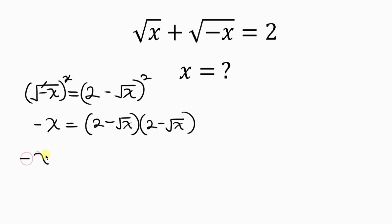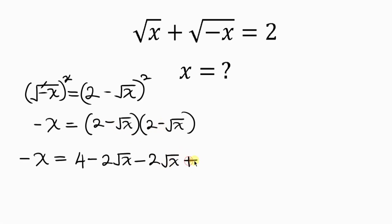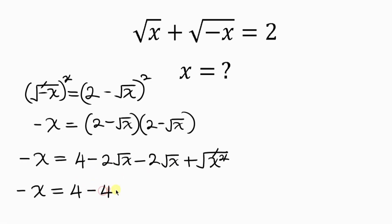So we have negative x equal to: expanding the right hand side, 2 times 2 is 4, minus 2 times the square root of x is 2 root x, and then minus the square root of x times the square root of x, which is x. Simplifying further, negative x equals 4 minus 4 root x plus x.